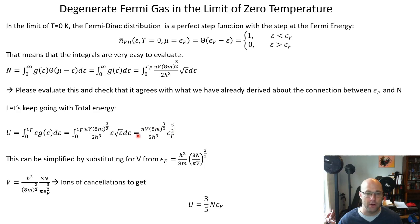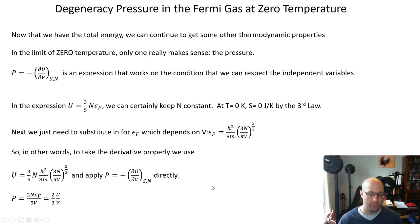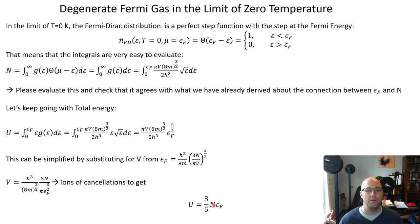This looks not super easy to work with, but we can simplify it using a substitution trick. If you substitute for the system volume using the relationship between the Fermi energy and the number density, you get a whole bunch of cancellations. Please do it yourself to make sure you're handy with these formulas. You get that the total energy of the system is simply U = (3/5)·N·E_F — a much simpler formula that shows how important the Fermi energy is. In the limit of zero temperature, this almost feels like U = N·ē.